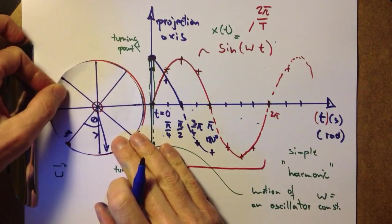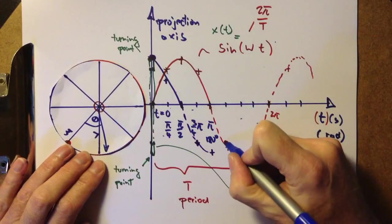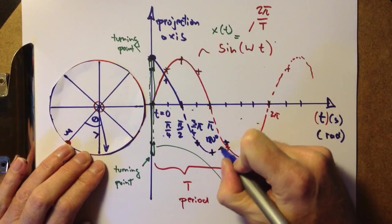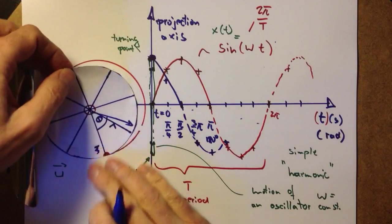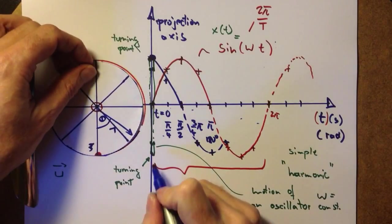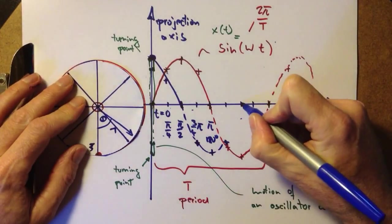Then another 45 degrees. We again have a negative speed, but not as much. And finally, at this point, we know at the turning point, now the speed is zero, so now we're here.